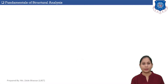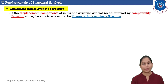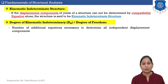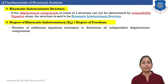Let's start with the definition of kinematic indeterminate structures. If displacement components of joints of a structure cannot be determined by compatibility equations alone, the structure is said to be a kinematic indeterminate structure. Degree of kinematic indeterminacy is also known as degree of freedom and it is denoted by DK. Degree of kinematic indeterminacy is the number of additional displacement components necessary to determine all independent displacement components.